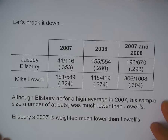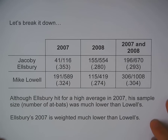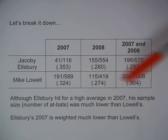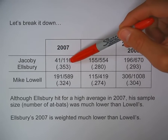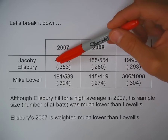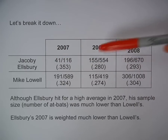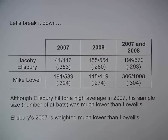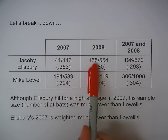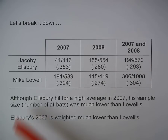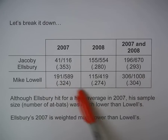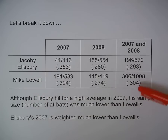Let's see where Simpson's paradox comes into play. If we take a look at just the raw numbers — giving both the number of hits and the number of at-bats — in 2007 Ellsbury had 41 hits in 116 at-bats, and in 2008 he had 155 hits in 554 at-bats, for a combined total of 196 hits in 670 at-bats. Looking at Lowell with the same breakdowns, his two-year batting average was .304 compared to Ellsbury's .293.